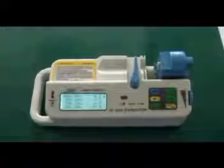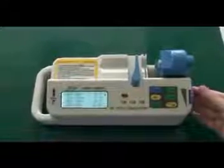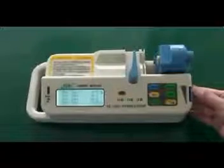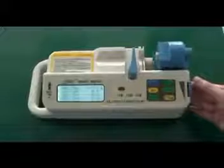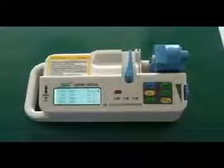Thirdly, turn the adjusting knob to make the cursor point at set 50 ml. Then, fix the 50 ml syringe into the pump.